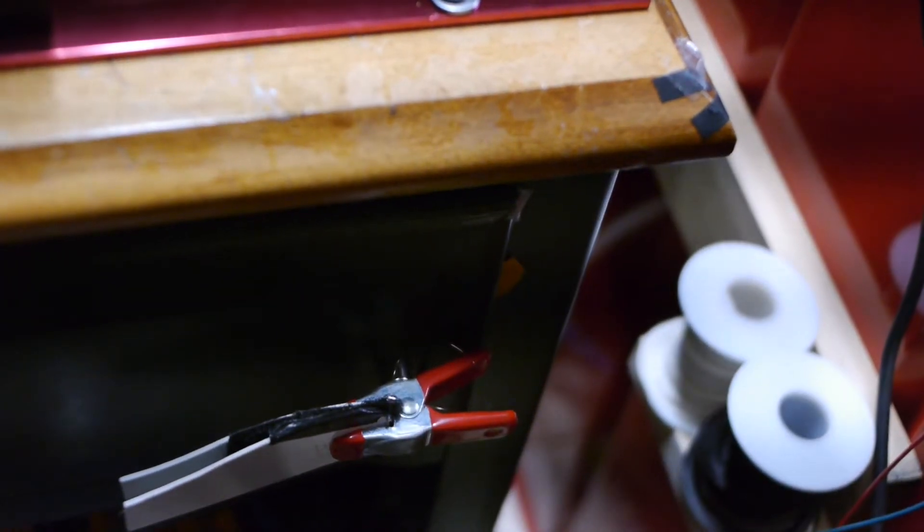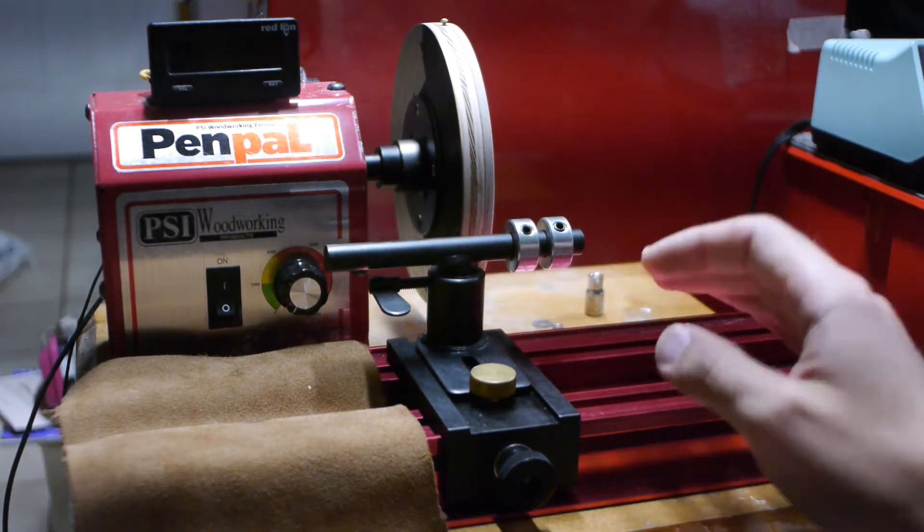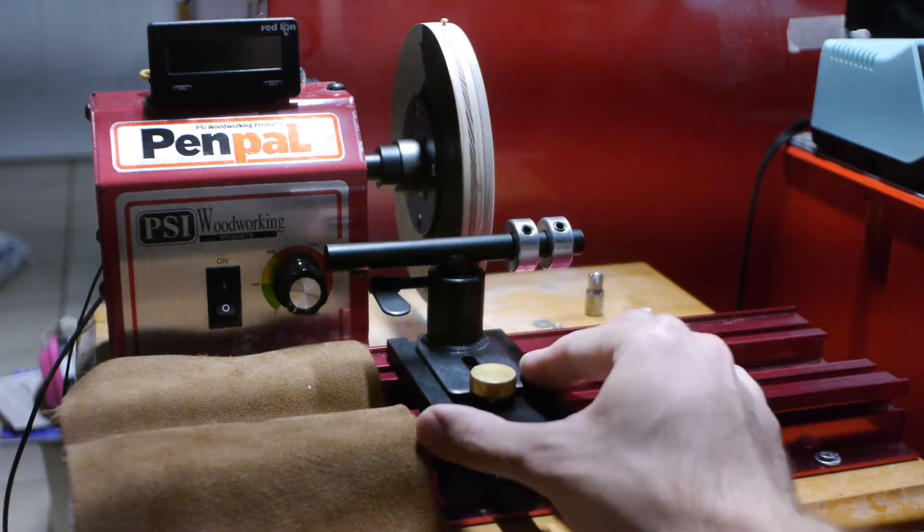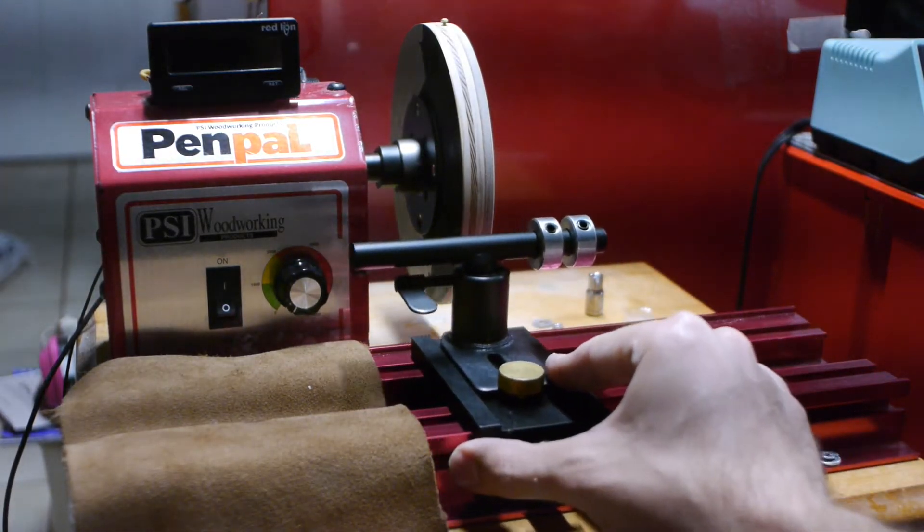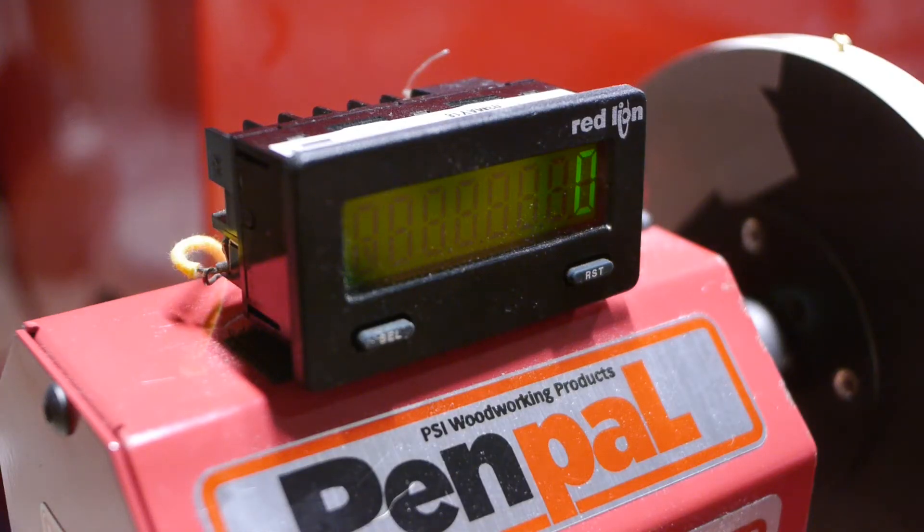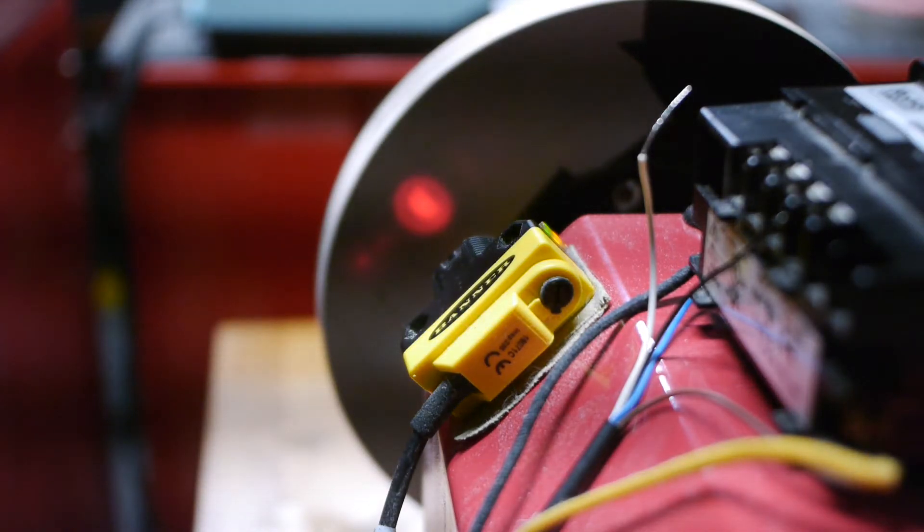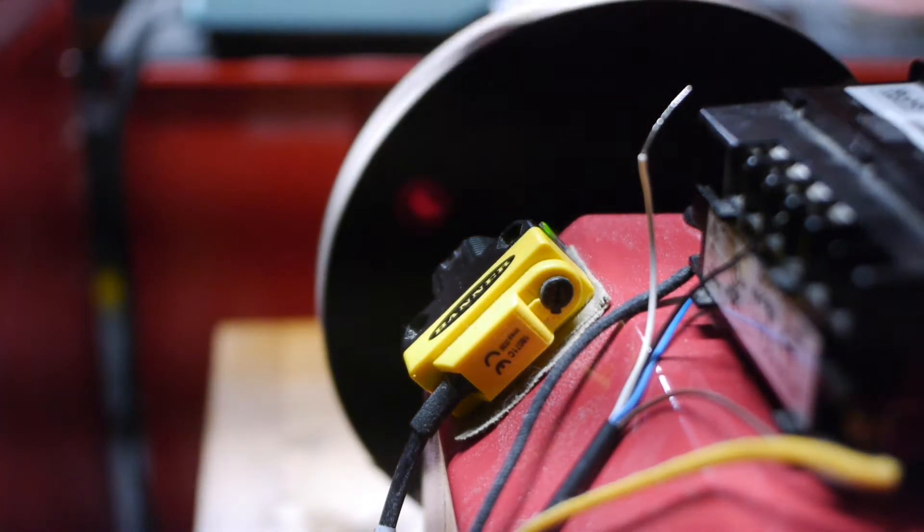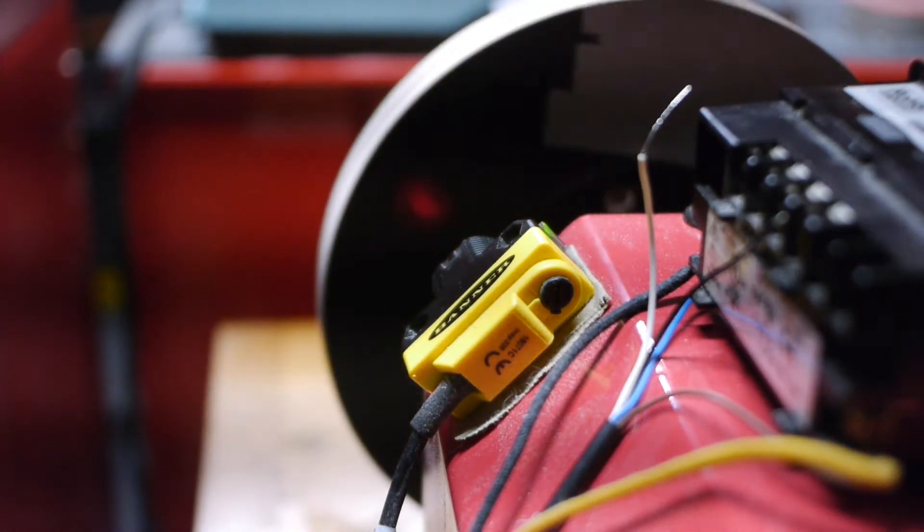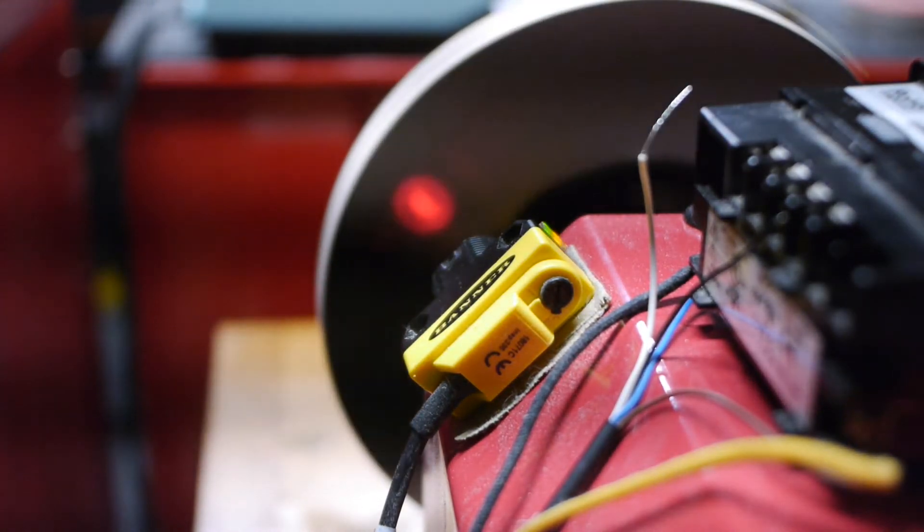So that takes us to our next stop which is the Pen Pal lathe. I cut the tail stock off right here, mounted it down here, and the chisel rest works as the perfect traverse limiter. Mounted on top is a Red Lion panel meter and an RRDC2000 retro reflective sensor. The laser distinguishes the difference between the reflective tape and the flat black enamel paint that I put on the back of this plate. So as you wind, it counts the turns.